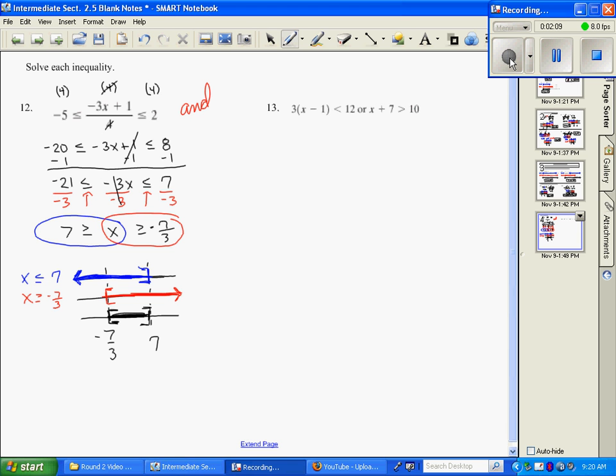So they overlap in the middle, which if I describe this in interval notation, as I read left to right, I have negative 7 thirds with a bracket and 7 with a bracket. So this is going to be my solution.